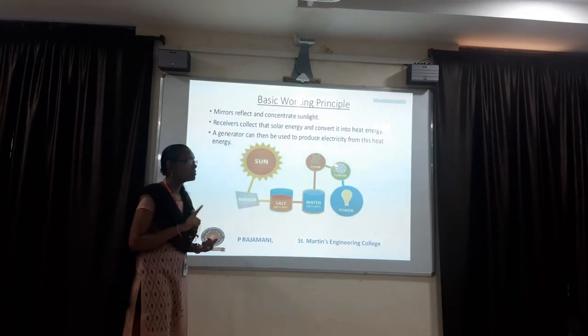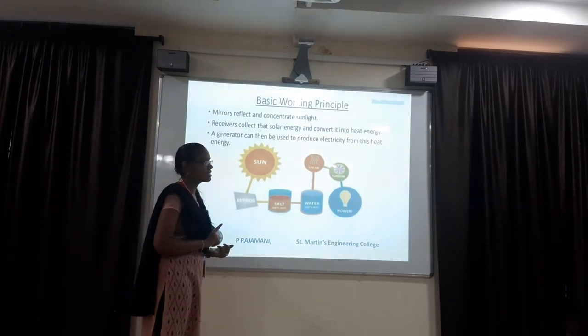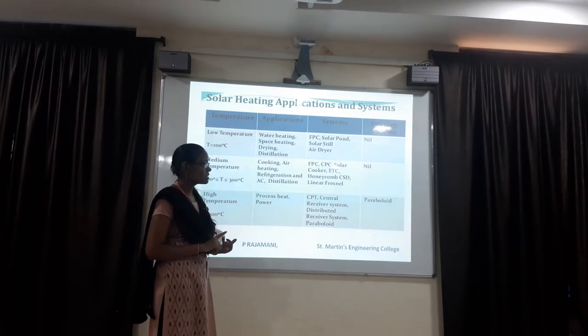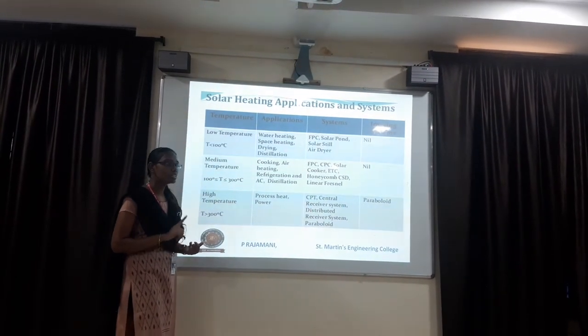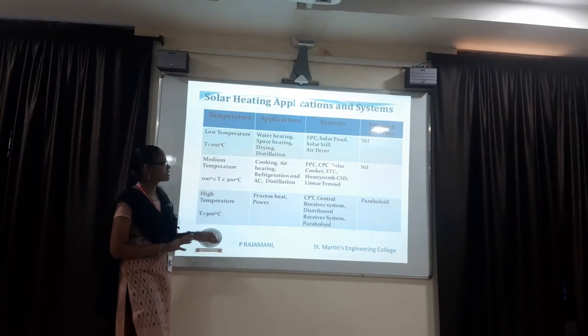First, solar energy is converted into heat energy. Then, again, heat energy is converted into electrical energy by using turbines. The turbine is one of the components of the solar thermal conversion system.